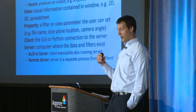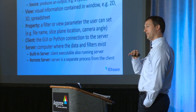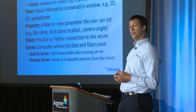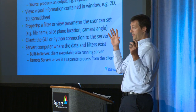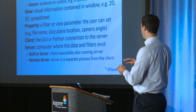Now some ParaView and VTK jargon. We call something a 'filter' — VisIt would call that an 'operator' in many cases. A filter is a general way of taking in some pieces of information, usually a data set, operating on it in some way, and outputting the results. For example, a slice filter takes in a full volumetric data set, puts a slice through it, and outputs a 2D slice through that domain.